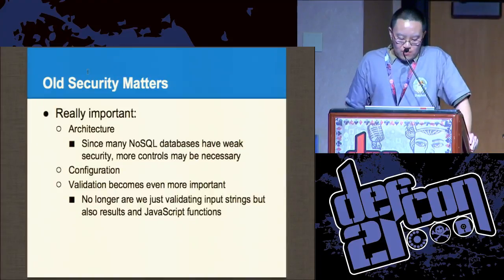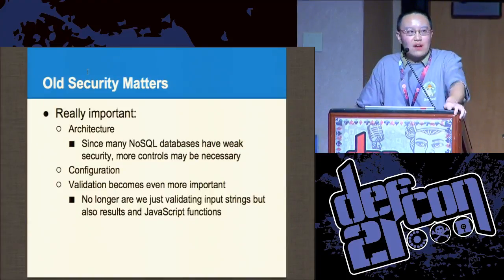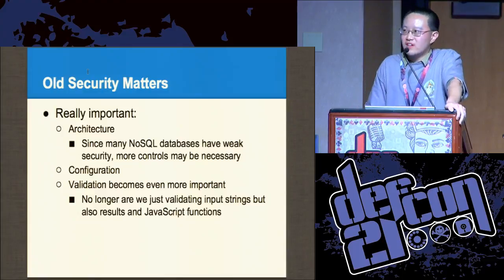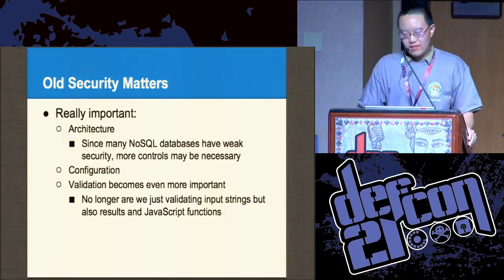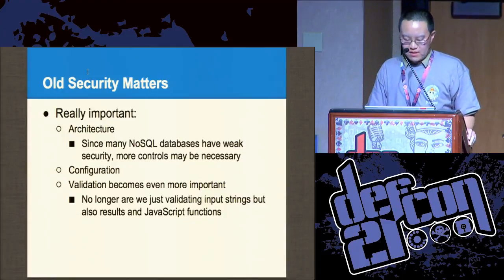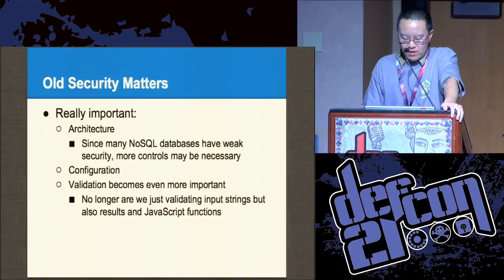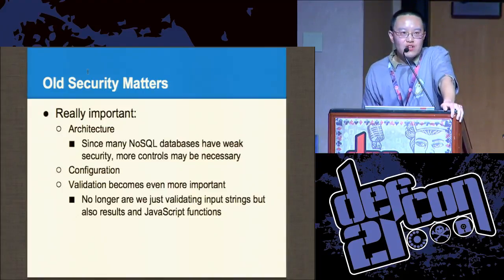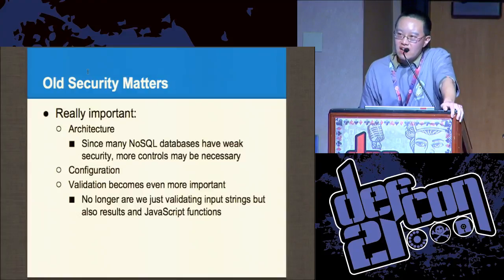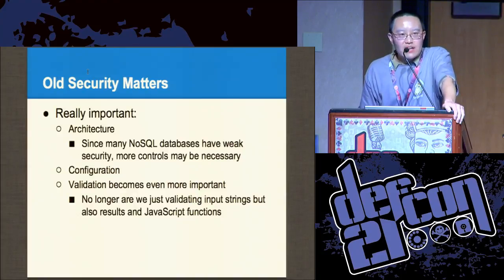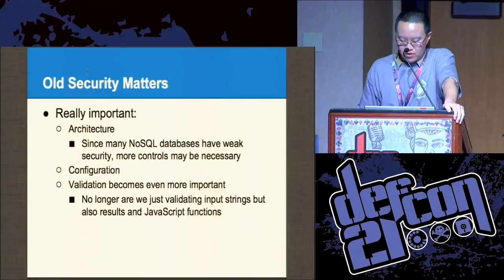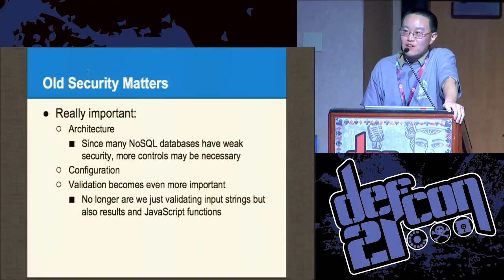So how do you protect yourself? How do you secure NoSQL databases? I hate to use the term "defense in depth" because it's overused, but the full perimeter security is really, really important. Configuration — if you want to make NoSQL databases work right, you can't just take it out of the box and expect to use it right away. And validation becomes very important — not only are you validating inputs including JavaScript functions, but for output you also have to validate binary JSON and JSON as well.